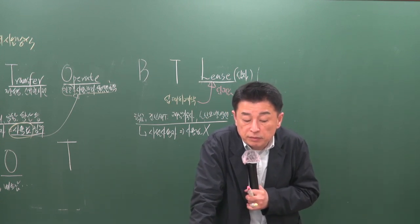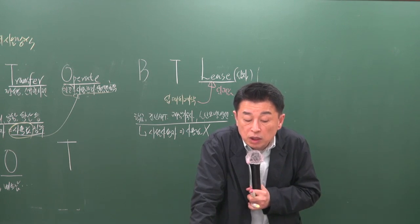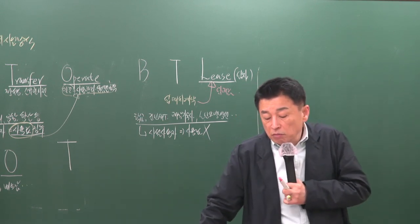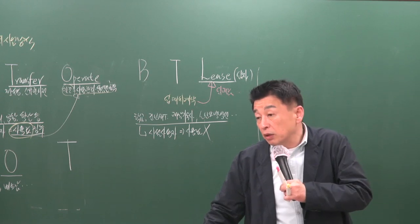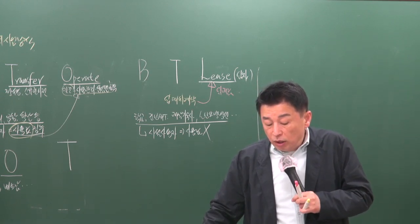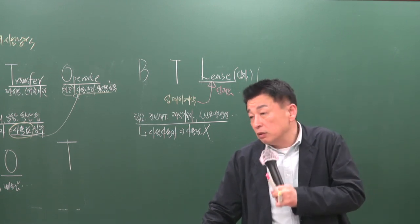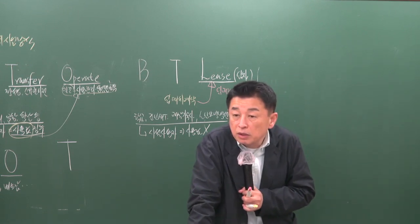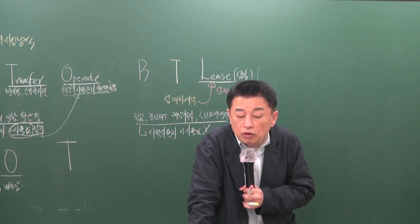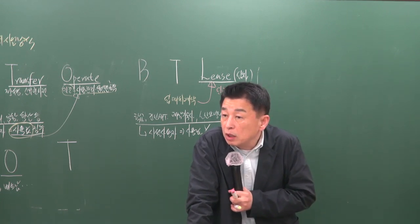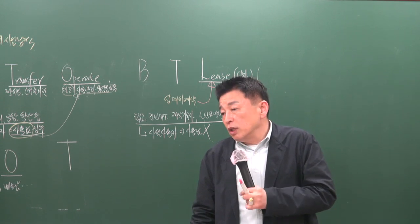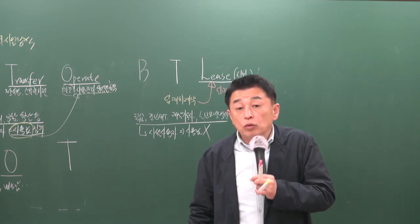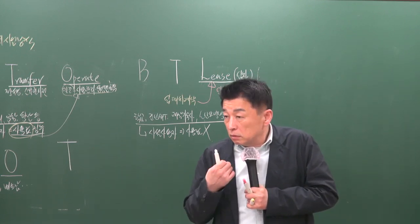422페이지 16번 문제를 보면 '민간이 개발한 시설의 소유권을 준공과 동시에 공공에 귀속시키고(BT), 민간은 일정 기간 시설관리 운영권을 가지며, 공공은 그 시설을 임차해서 사용'한다고 했으므로 BTL입니다. 학교, 기숙사, 도서관, 군인 아파트 등에 활용됩니다. 이런 시설은 사용료만으로는 투자비 회수가 어렵기 때문에 정부 등이 임대료를 지급하는 조건입니다.